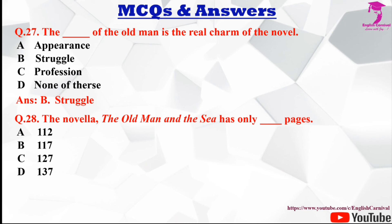Question number twenty-eight: The novel The Old Man and the Sea has only dash pages. Options are A 112, B 117, C 127, and D 137. The correct answer is C, it has only 127 pages.